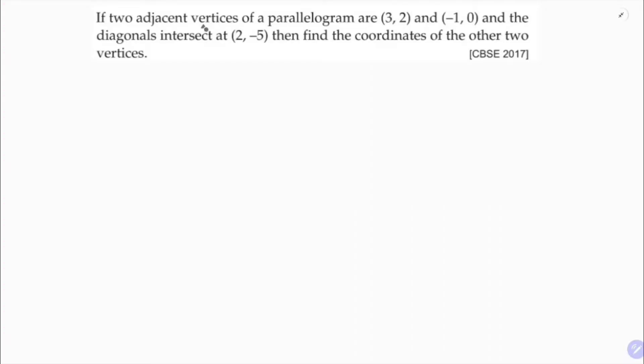If two adjacent vertices of a parallelogram are (3,2) and (-1,0) and the diagonals intersect at (2,-5), then find the coordinates of the other two vertices.